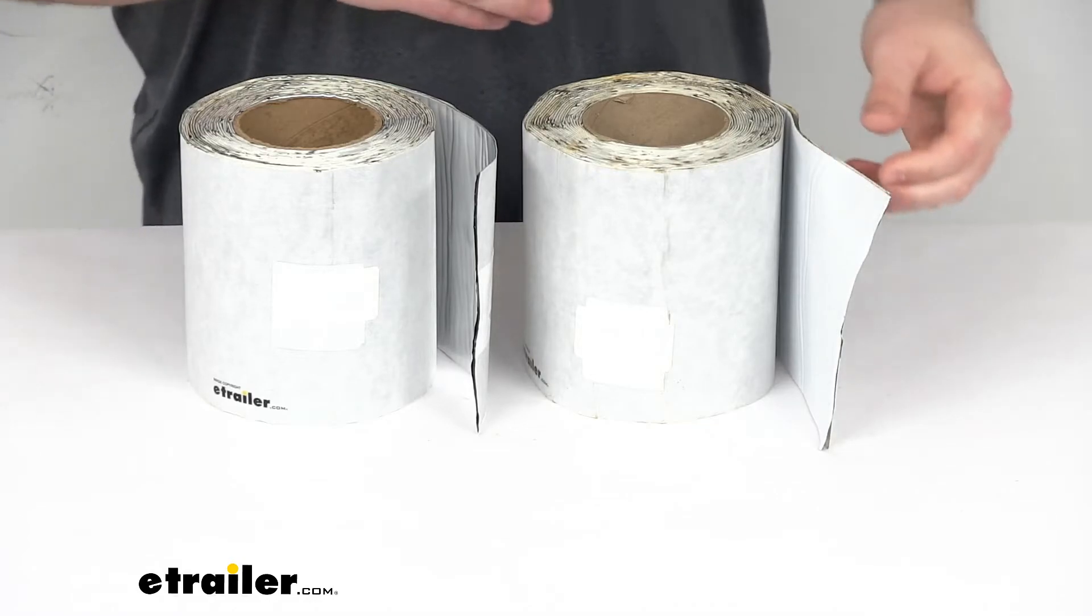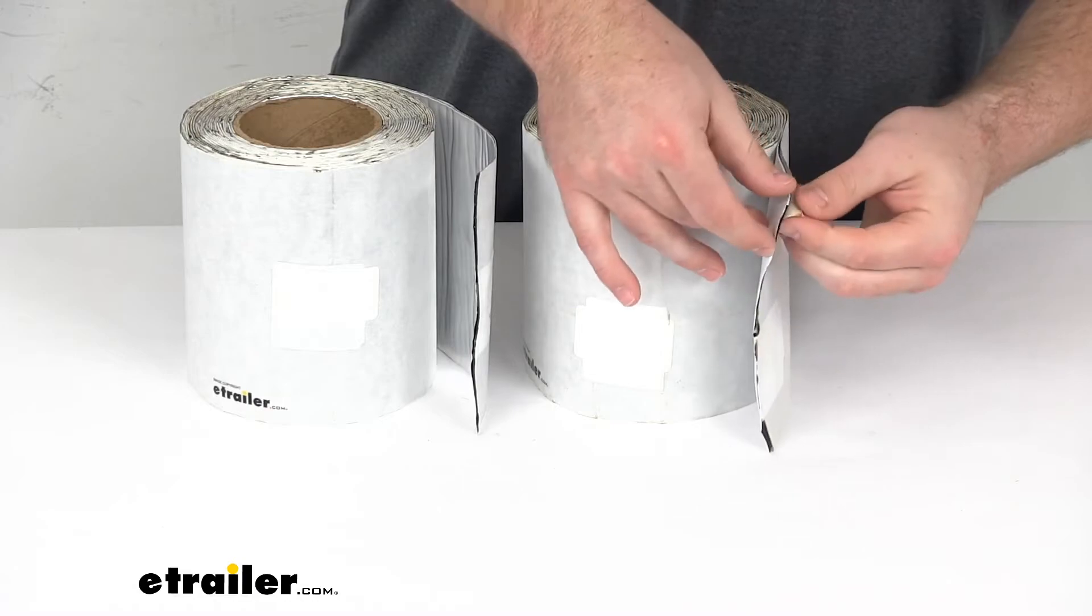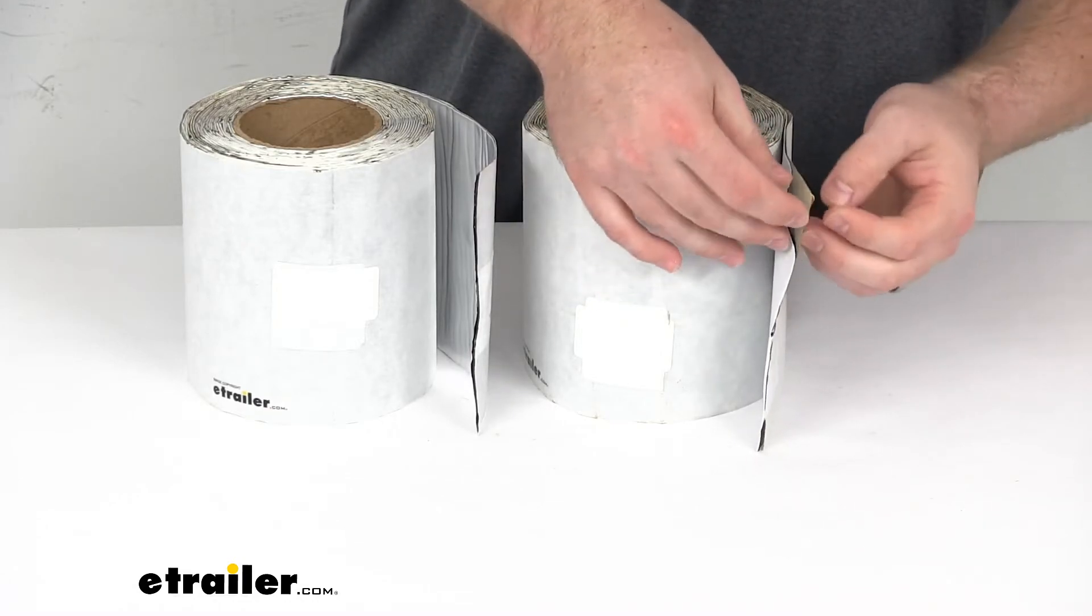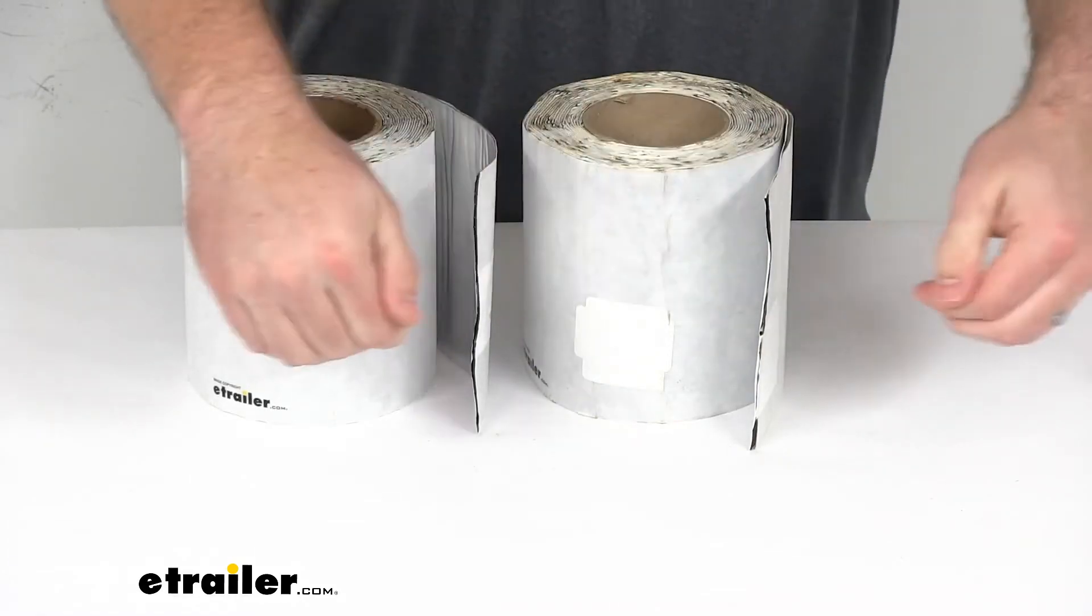And they are very easy to get installed. Basically just cut off the length that you need, peel off that backing paper there, and then stick it down like you would with any sort of tape. Make sure that it's nice and smooth.